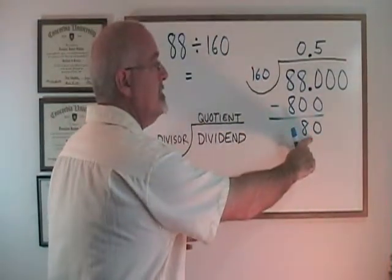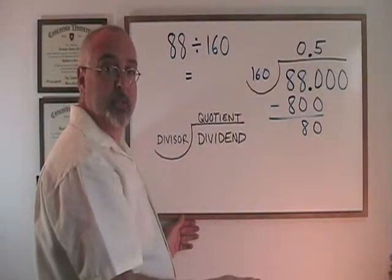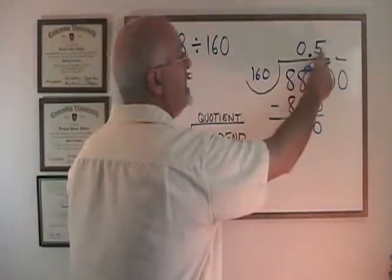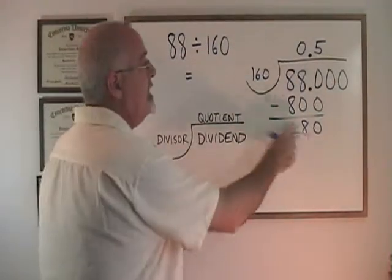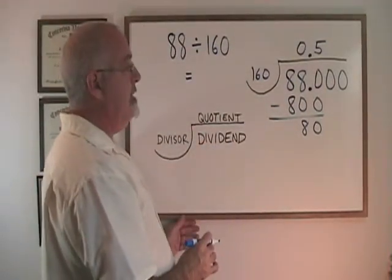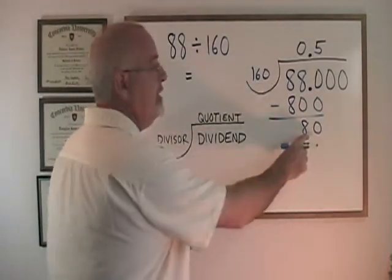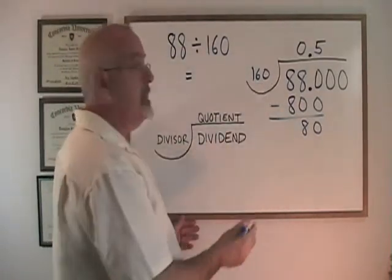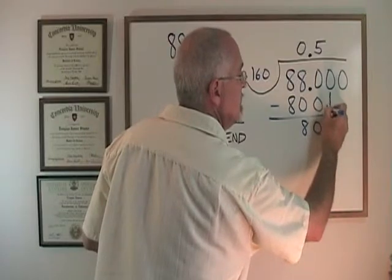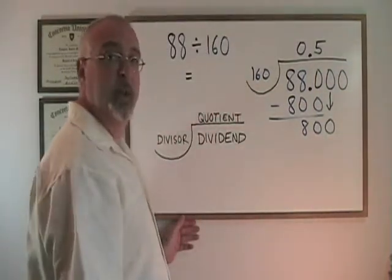This number has to be smaller than our divisor, or else we have made a mistake, and that would mean we would have to make this number larger. But 80 is smaller than 160, so this time we are okay. I know that 160 will not fit into 80, so I need another zero. I take one of these zeros and I slide it down into this position.